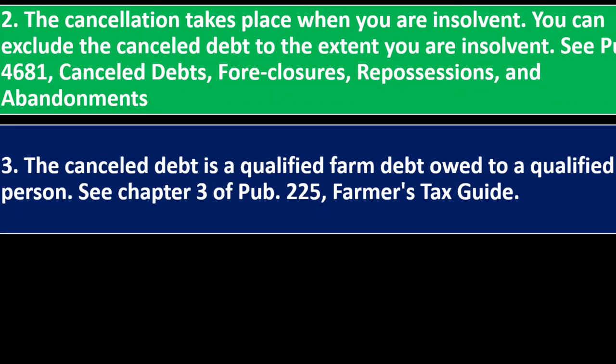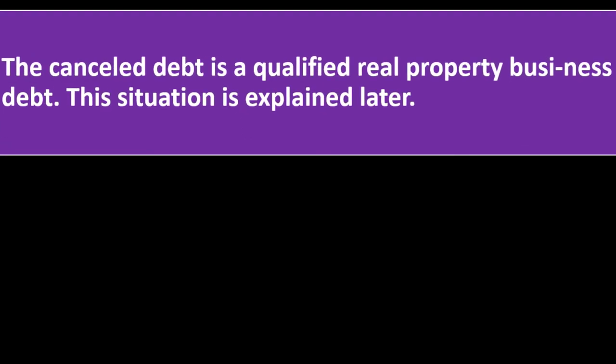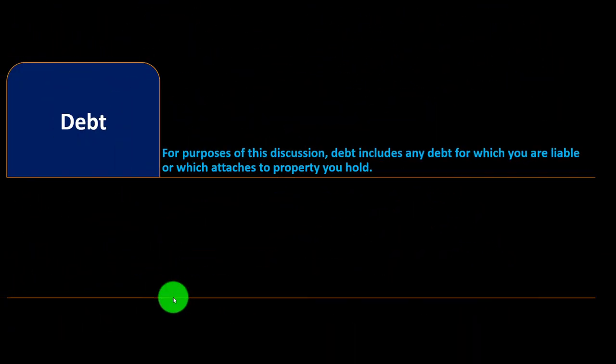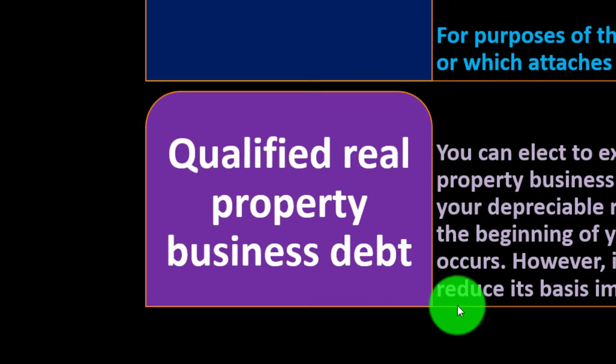Number three: the canceled debt is a qualified farm debt owed to a qualified person — see chapter three of Publication 225, Farmer's Tax Guide. Number four: the canceled debt is a qualified real property business debt, explained later. Number five: the canceled debt is a qualified principal residence indebtedness discharged after 2006 — see the instructions for Form 982. For purposes of this discussion, debt includes any debt for which you are liable or which attaches to property you hold.